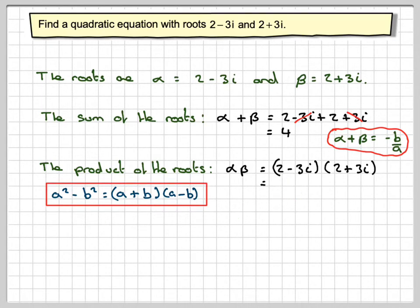That means I'm going to square the 2 to get 4. And have to square, take away the square of 3i squared. Now i squared is minus 1. So minus minus,